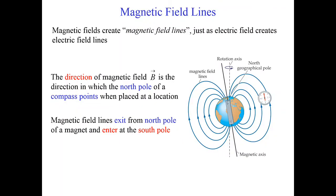To visualize a magnetic field, just like we did with electric fields, we draw magnetic field lines. The magnetic field is labeled with the letter B, and it is a vector. The magnetic field lines come out of the north magnetic pole and toward the south magnetic pole of a magnet.